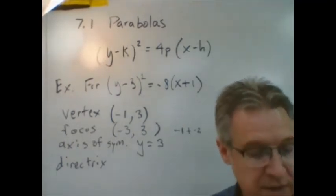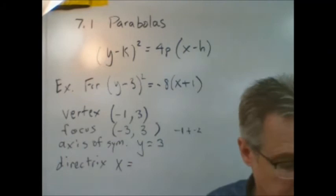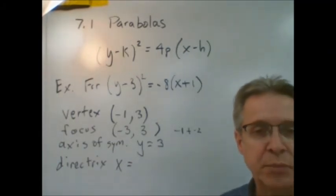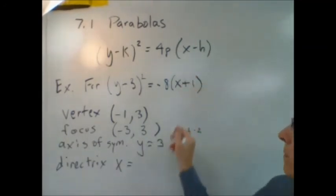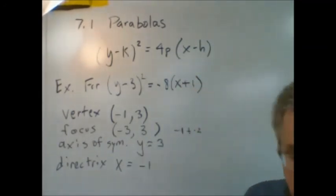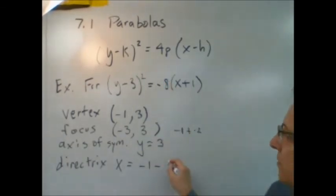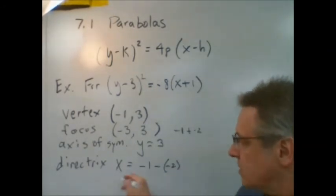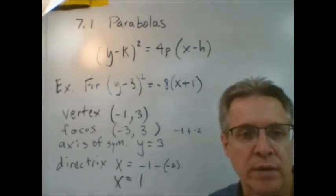Finally, the directrix. This says x equals h minus p. h is negative 1. And then minus, and p we said was negative 2, right? And so negative 1 minus a negative 2, that's going to be a positive 1. And so the directrix equation is x equals 1.